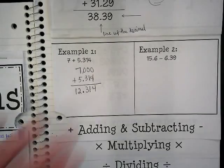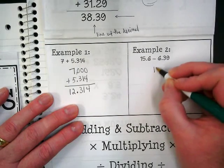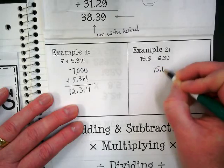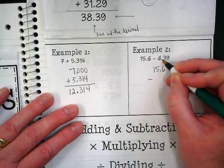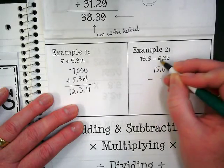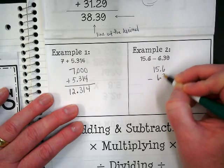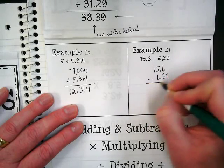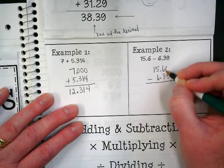The same is true when we are subtracting. We're going to first put down the numbers that we're subtracting, making sure to line up the decimals. So we put the 6 here and the 0.39. Over here we can add a 0.